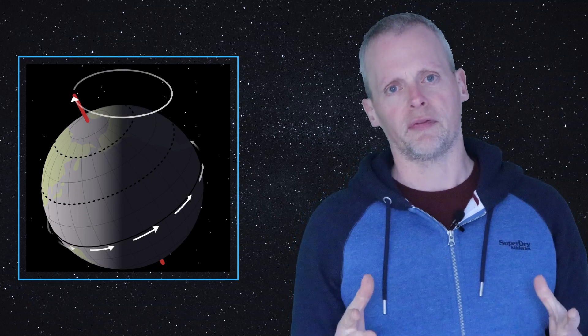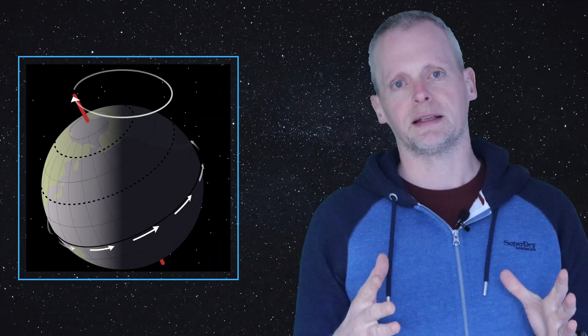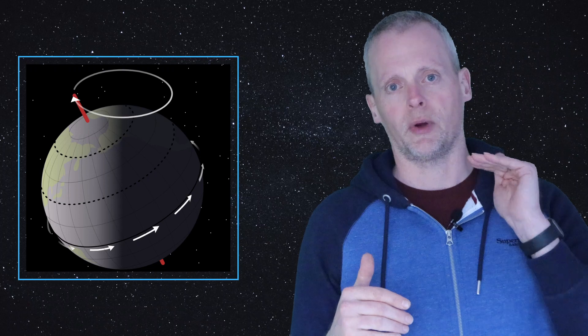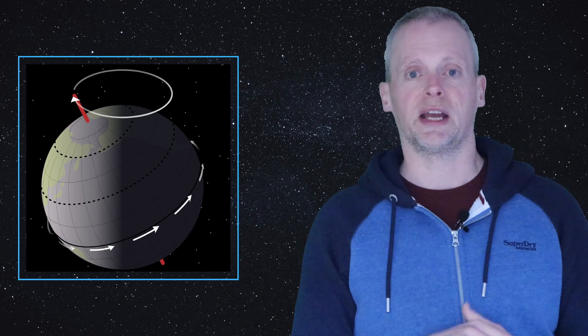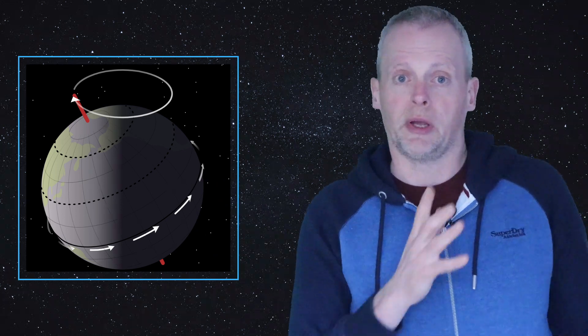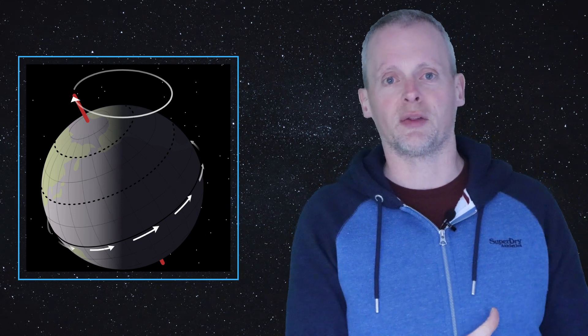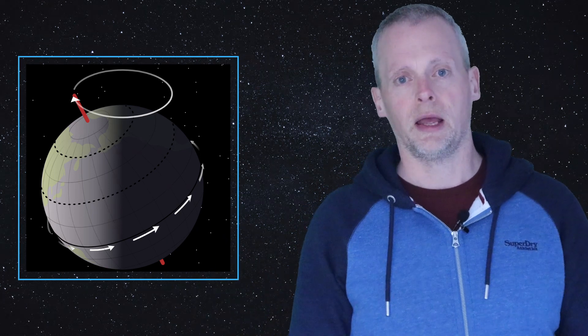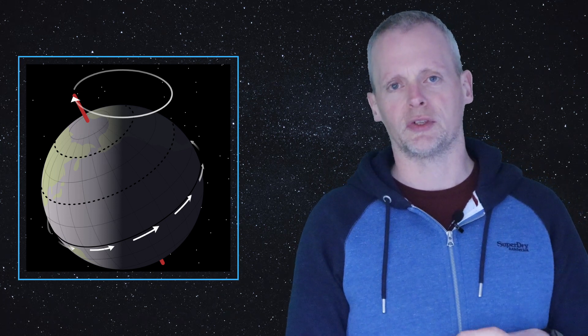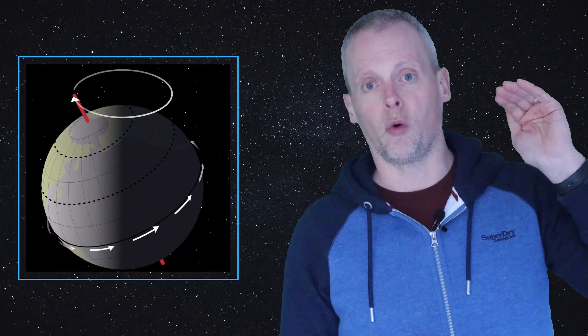So every 50 years we reset the celestial sphere. We reset where zero line of right ascension is, and that is why you see coordinates that have J2000 attached to them, because the last time this was done was in the year 2000. The next time we'll do it will be in the year 2050, and even then the impacts will be really small unless you happen to live quite close to the either the north or south poles.